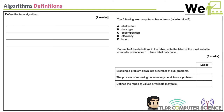We're looking at the first question: define the term algorithm. What we're talking about is a sequence of instructions to achieve a goal or task.